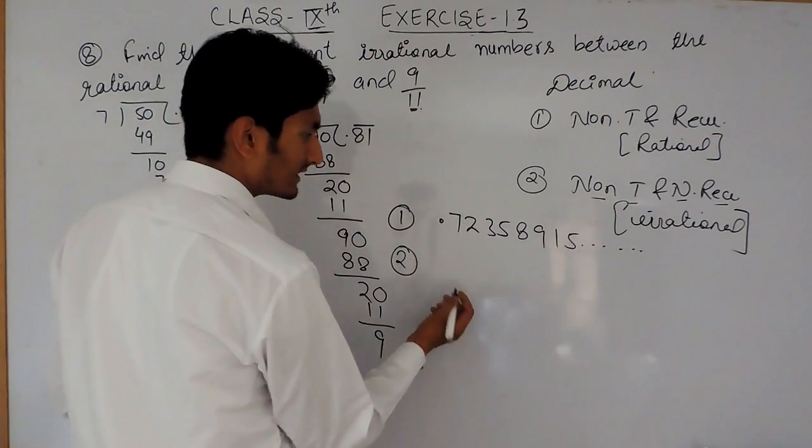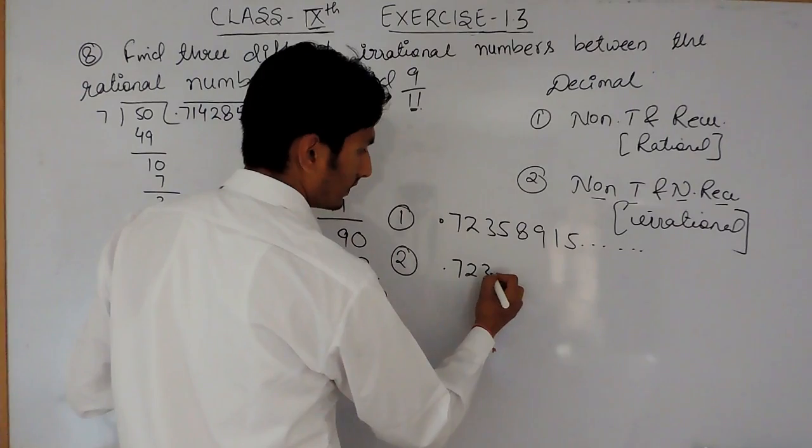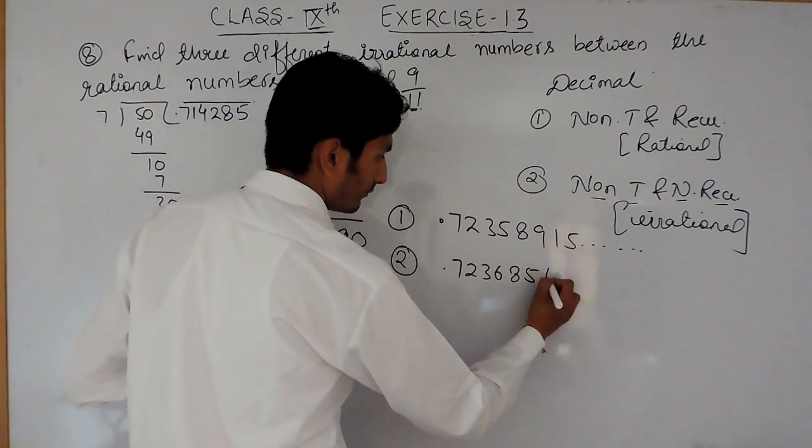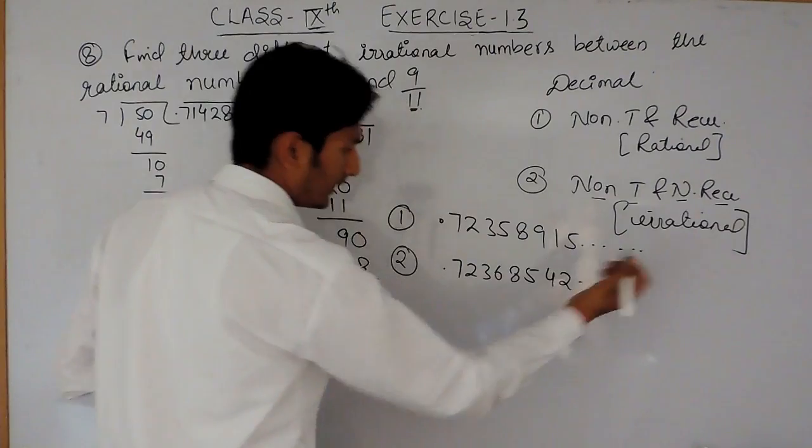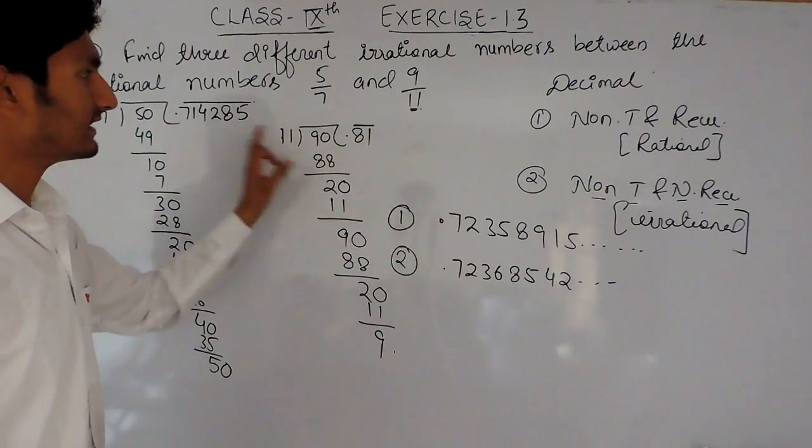Similarly, if you want to find the second one, this will be 7.2368542 and so on. Any number between this and this could be an irrational number between these two.